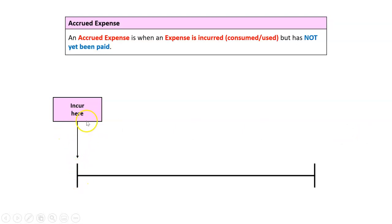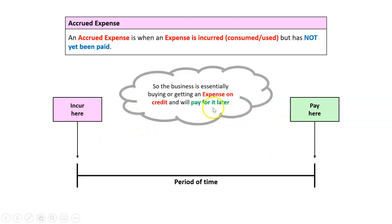Let's say this is today. We incur an expense here, a period of time goes by, and then we pay for it. That period of time could be a day, a week, a month, a year, but the point is we incur or consume it before we pay it. So we could say an accrued expense is basically where the business is buying or getting an expense on credit, and we'll pay for it later. That was the exact opposite of a prepaid expense. With a prepaid expense, we had the payment bit at the start, and then the incurred bit was later.